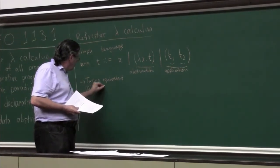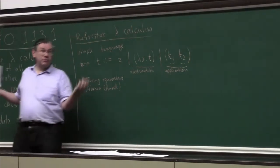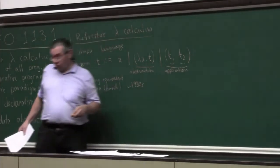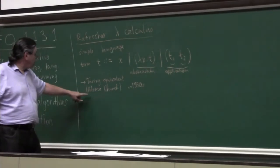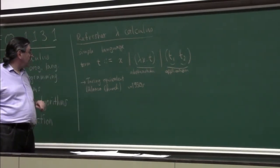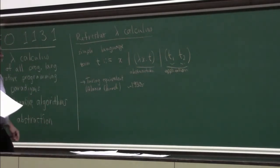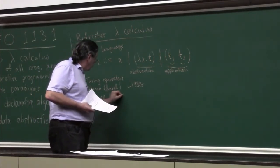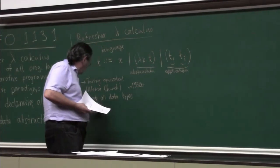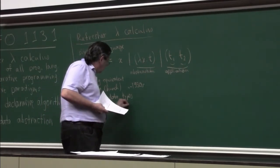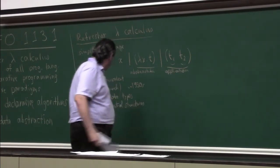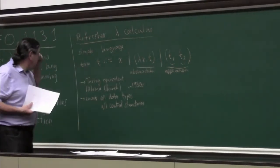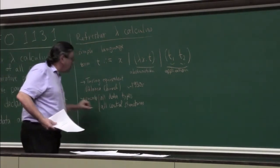This was known a long time ago by Alonzo Church who defined the lambda calculus in the 1930s. He was a logician investigating computation during the period of the first computers, which were very primitive. You can encode everything in the lambda calculus — all data types, all control structures.